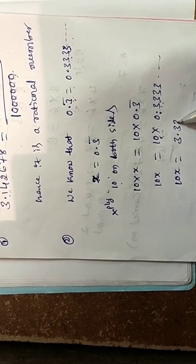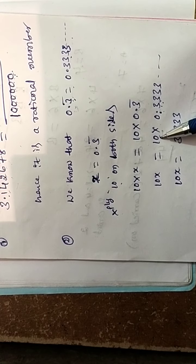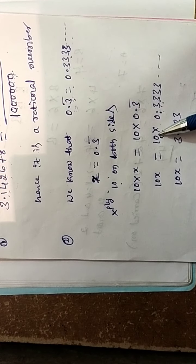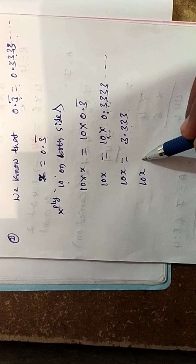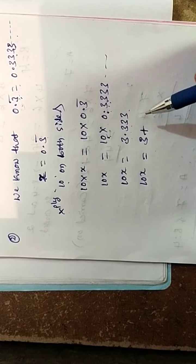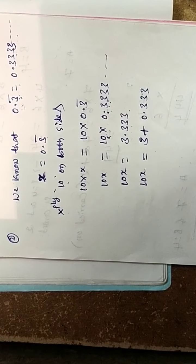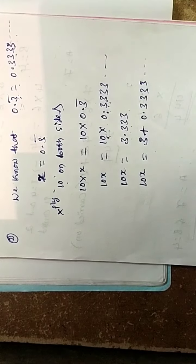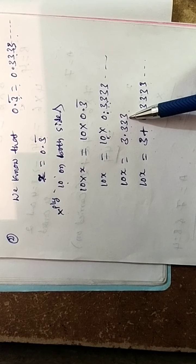So 10x is equal to 3.333... We can express 3.333 as 3 plus 0.333. And 0.333 repeating is what we called x. So 10x is equal to 3 plus x.